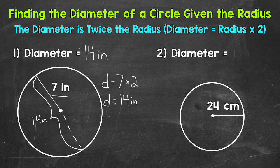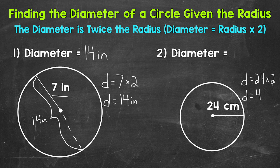Let's move on to number two where we have a given radius of 24 centimeters. So our diameter equals our given radius of 24 centimeters times two. 24 times two equals 48, so our diameter equals 48 centimeters.